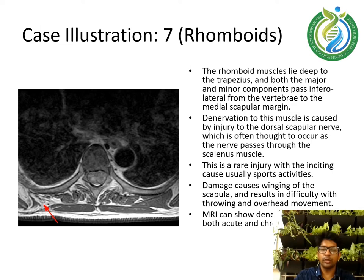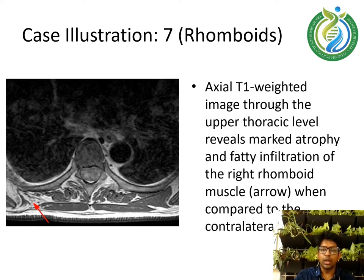Case illustration 7 — Rhomboids. The rhomboid muscle lies deep to the trapezius; both the major and minor components pass inferolaterally from the vertebrae to the medial scapular margin. Denervation of this muscle is caused by injury to the dorsal scapular nerve, which is often thought to occur as the nerve passes through the scalene muscle. This is a rare injury, with the inciting cause usually being sports activities. Damage causes winging of the scapula and difficulty with throwing and overhead movement. MRI can show denervation changes both acute and chronic. An axial T1-weighted image through the upper thoracic level reveals marked atrophy and fatty infiltration of the right rhomboid muscle compared to the contralateral side.